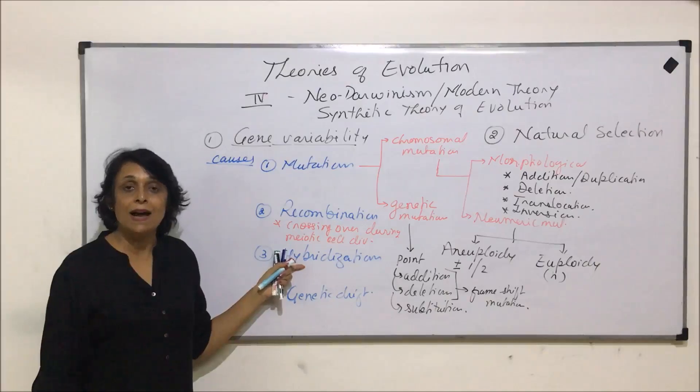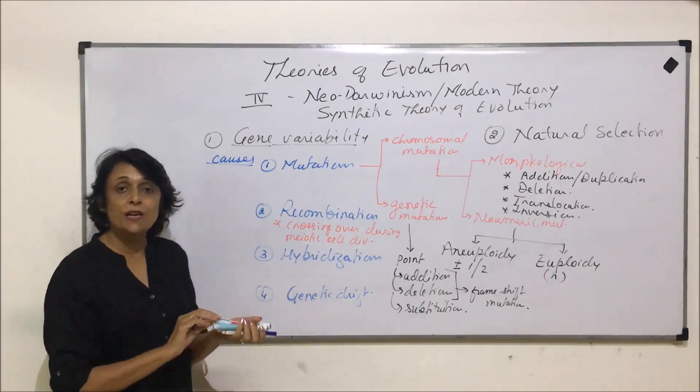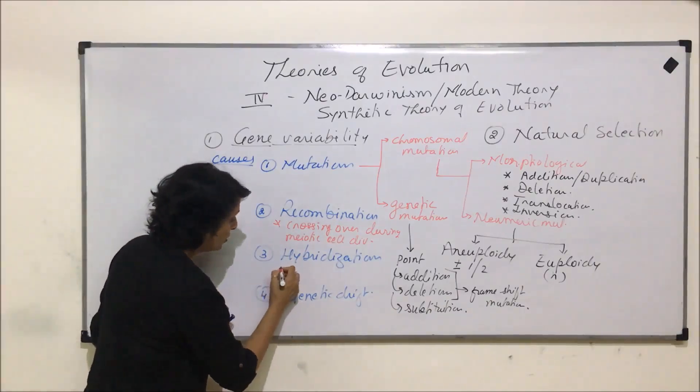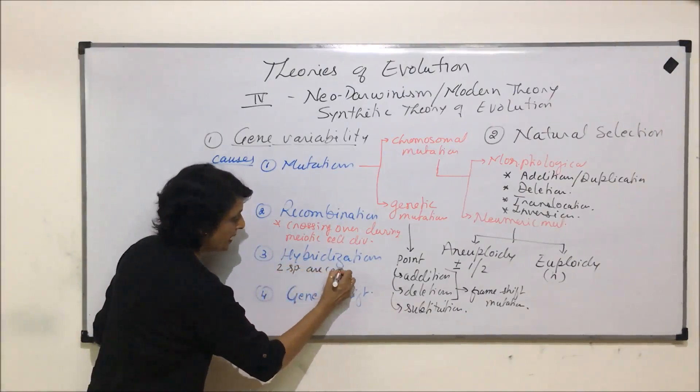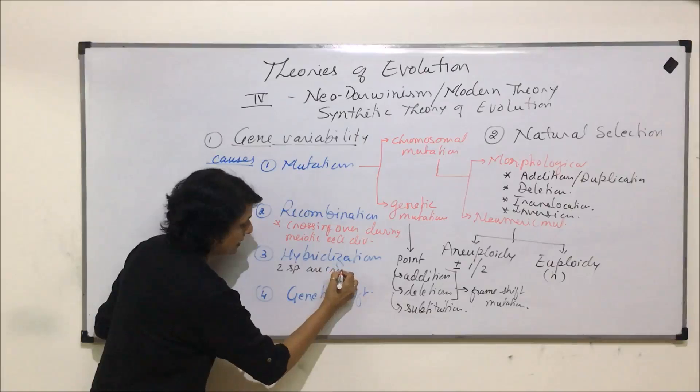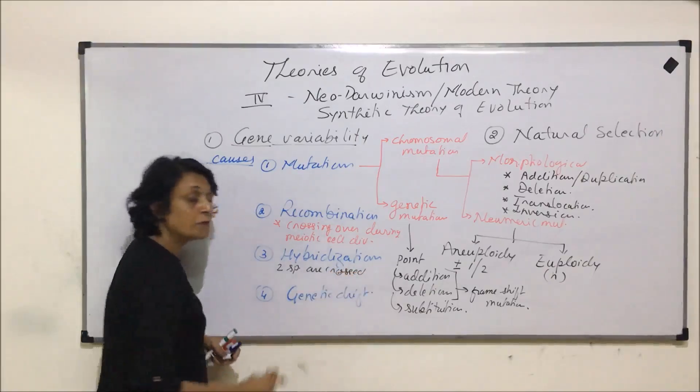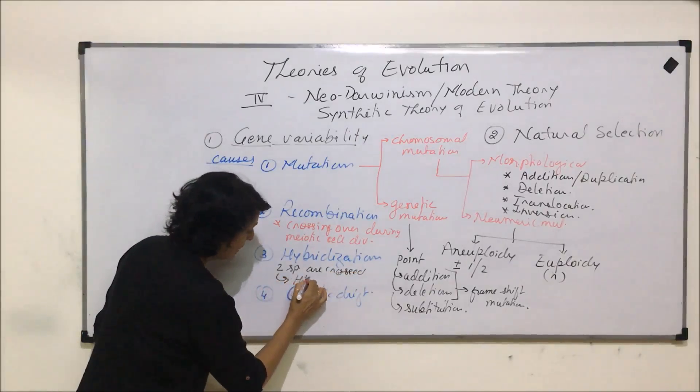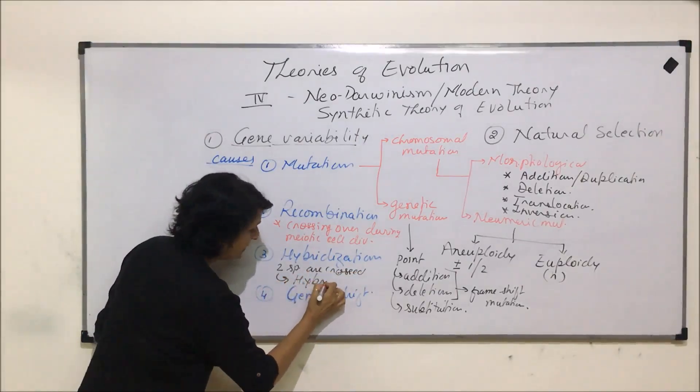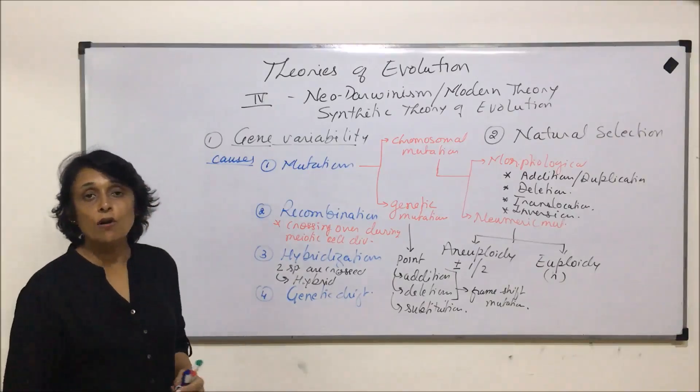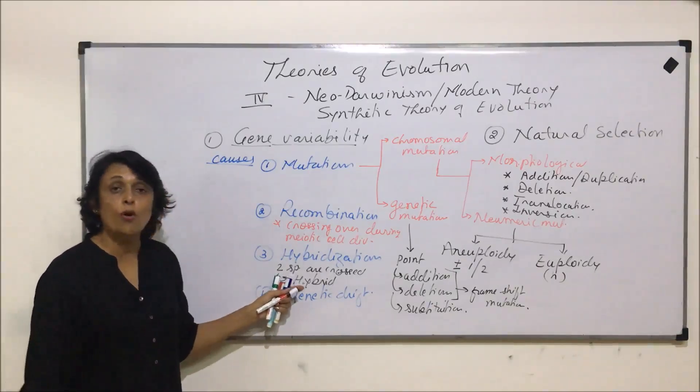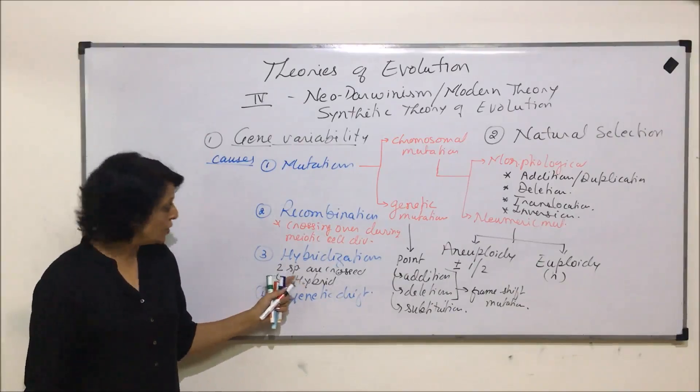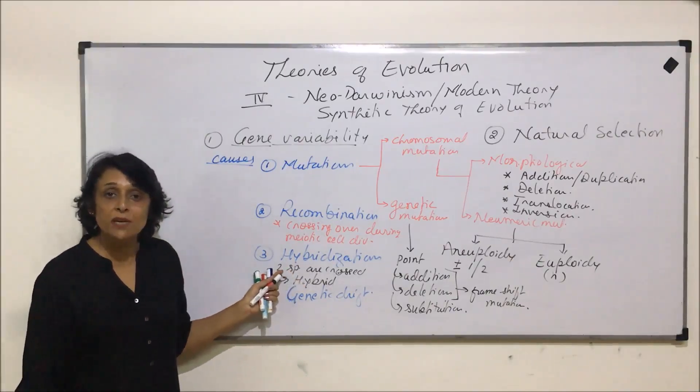The third cause is hybridization. During hybridization, different species or two species are crossed. And the offspring which is obtained is known as hybrid. And this hybrid shows variation or variability because it is going to show the characteristic features of both these species.